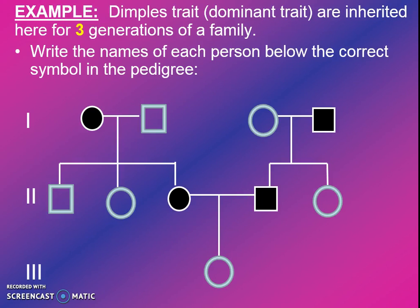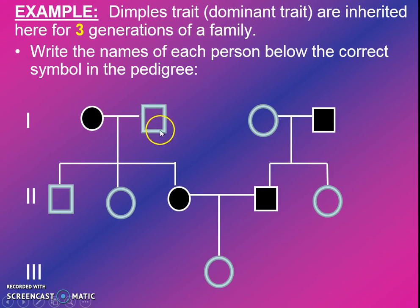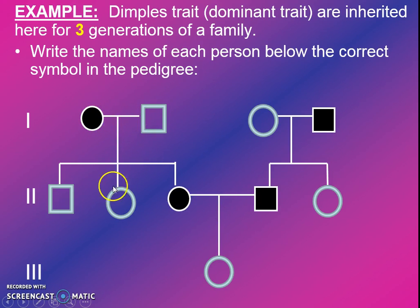So if we look at this example, which is going to be about dimples — which happens to be a dominant trait — over three generations, we would see a couple of things. We'd see the three generations here in Roman numerals. We'd see that some of the symbols are filled in and some of them are open symbols. The filled-in ones are black. We see a marriage and their children, a marriage and children, a marriage and children, and so on.